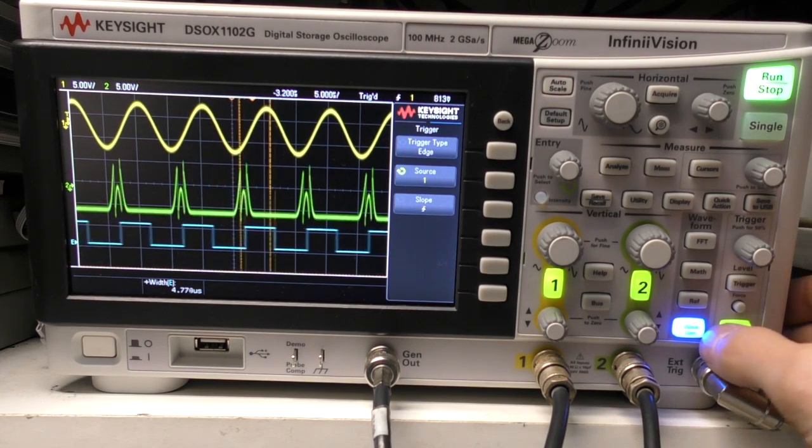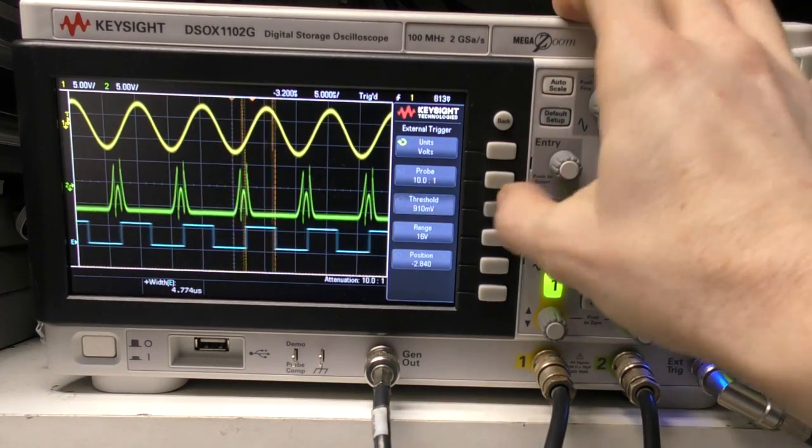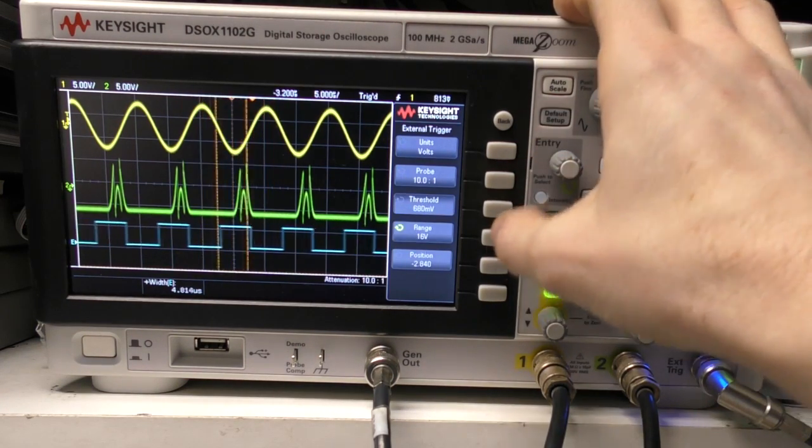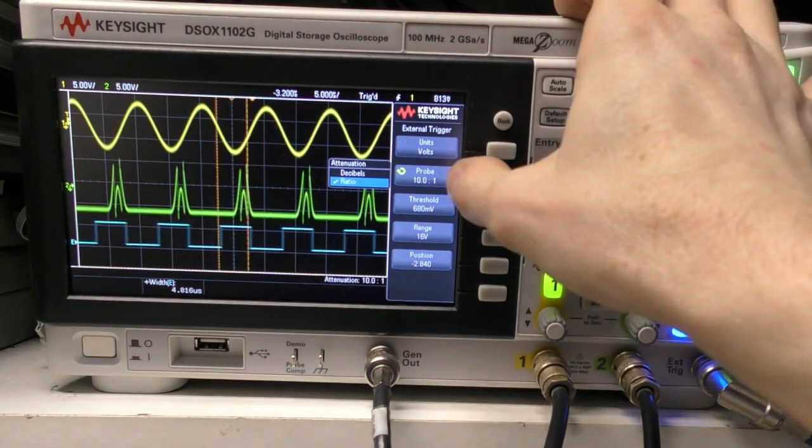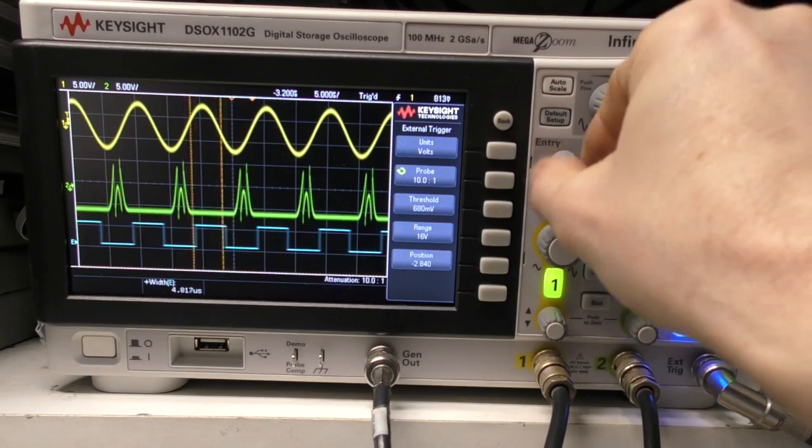It's like a 2 plus 1 MSO. And you can set the thresholds on it. But there's two different ranges, there's 1.6 and 8V, and it will take into account the probe ratios. This is set up to 10 to 1 probe, so if I just change that to 1 to 1 probe.